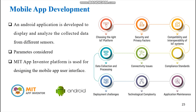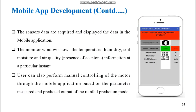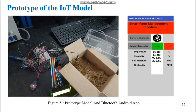For mobile app development, we used MIT App Inventor to design the mobile app to display and analyze collected sensor data. We considered nine parameters while designing the app, from choosing the right IoT platform to application maintenance. The app interface displays temperature, humidity, soil moisture, and air quality values. There is also a pump controller through which the motor can be controlled. This is the prototype of the IoT model and Bluetooth-based Android app designed in Phase 1.